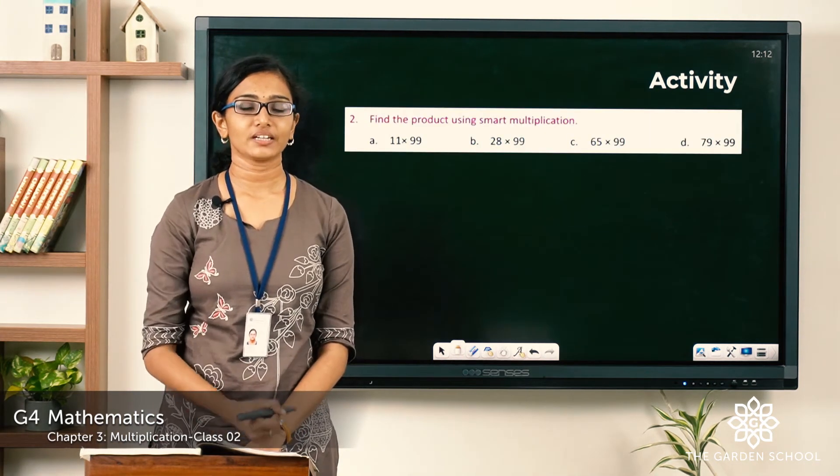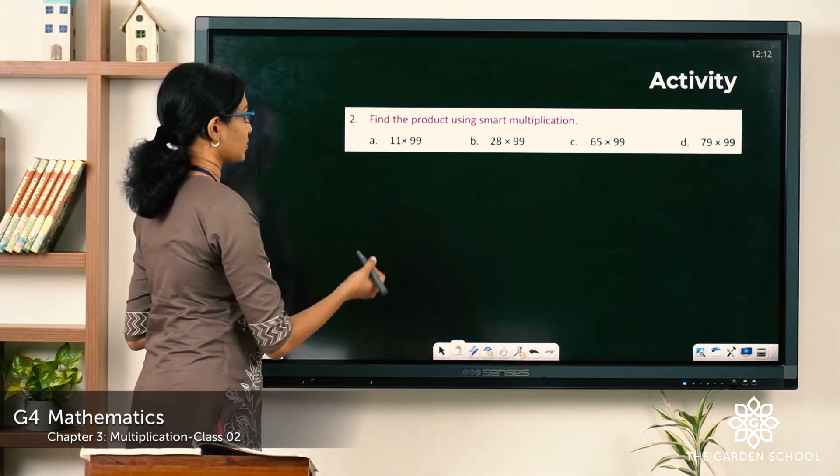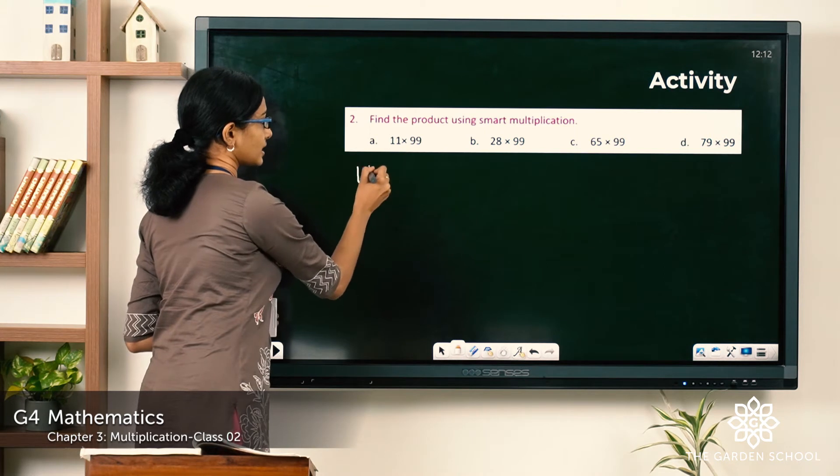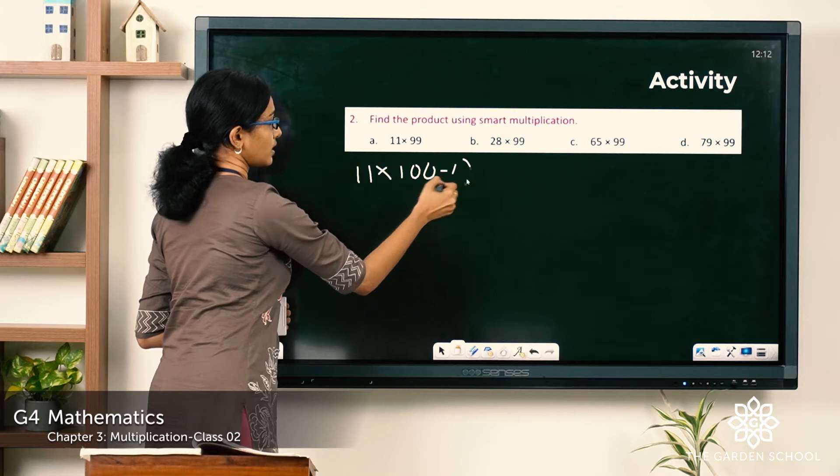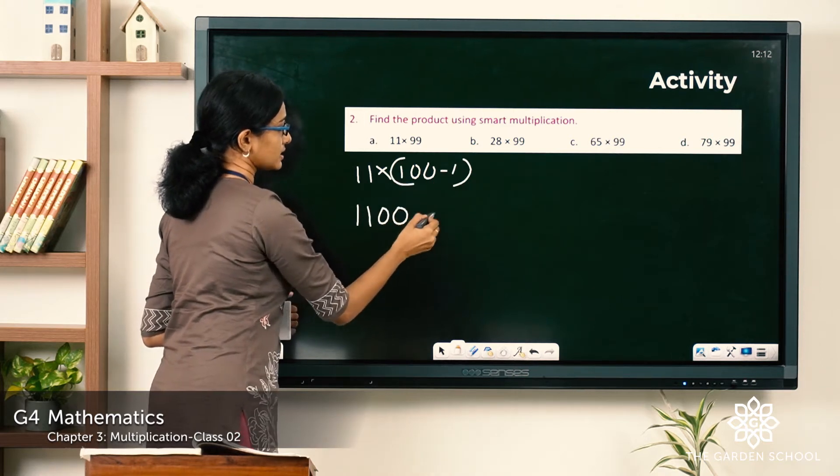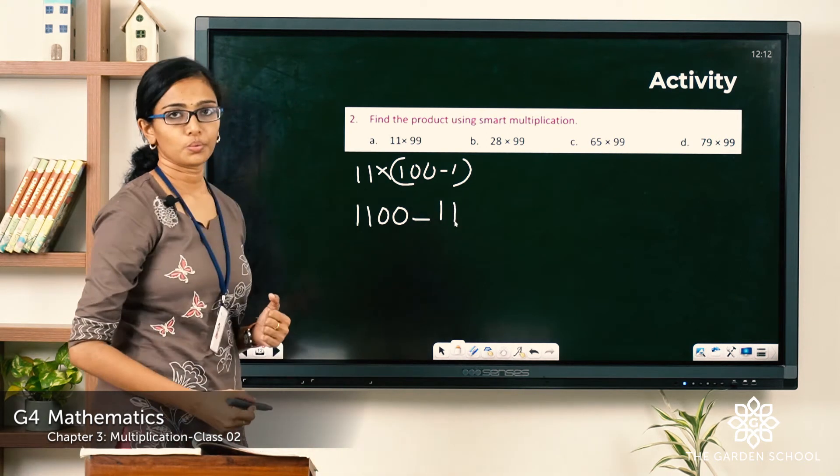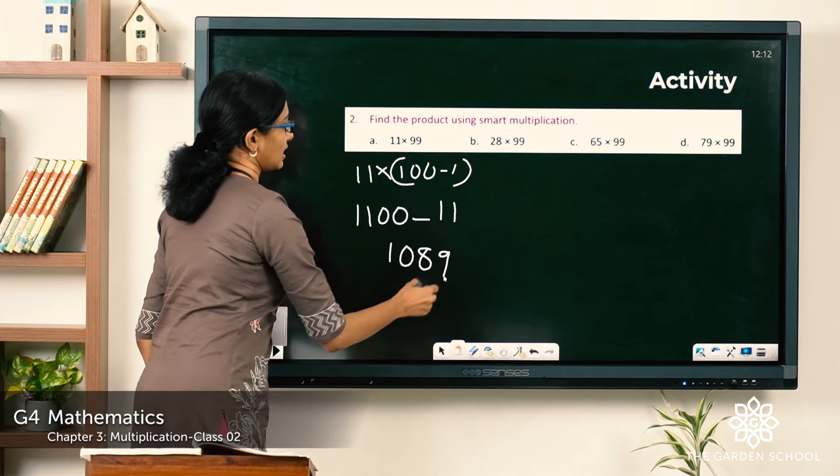Hope you finished writing the answers. Now let's discuss them. First question: 11 into 99. So 11 into 99 is equal to 11 into 100 minus 1 which is equal to 1100 minus 11. So what is the answer? It is 1089.